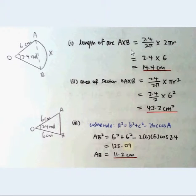To find the length of arc AXB, we take 2.4 over 2π times 2πR, where 2πR is the circumference of the circle and R equals 6. Therefore, AXB equals 14.4 cm.